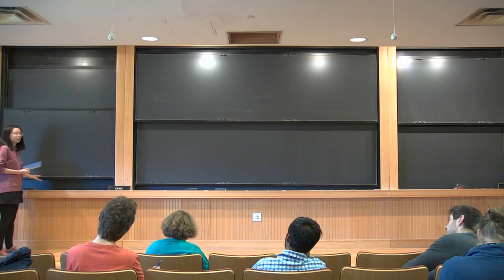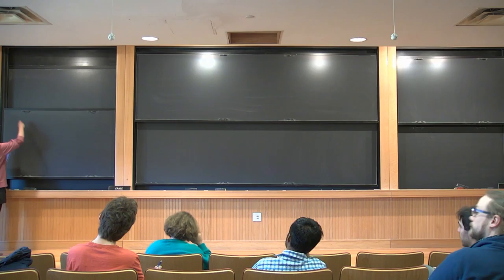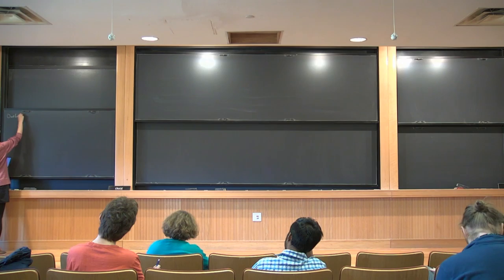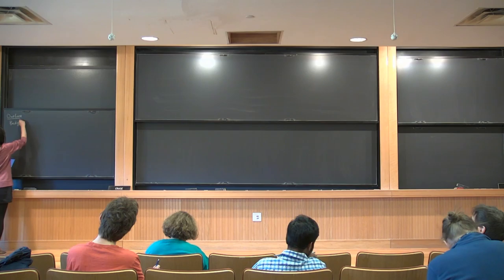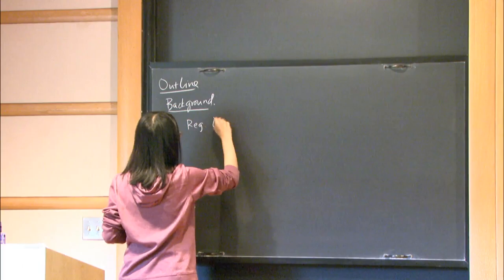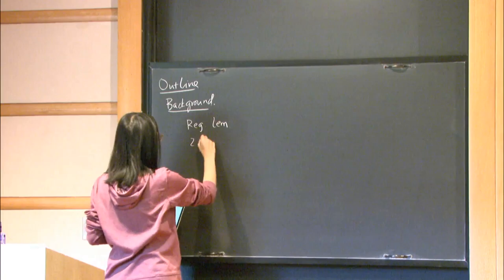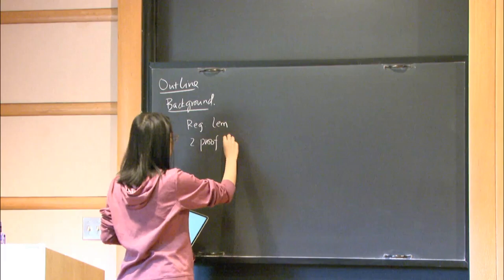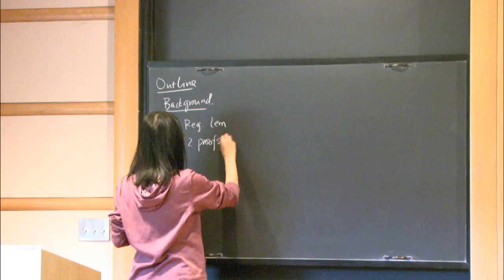You mentioned things around the regularity lemma and some of its applications. So this is a rough plan for today. First, I'll introduce the background, then I'll introduce what the regularity lemma is. I'll also introduce two proofs of the regularity lemma: one proof uses the entropy argument, which is well known, and the other is the spectral proof, which is even less well known among graph theorists.